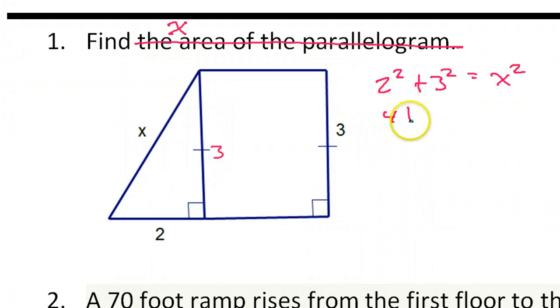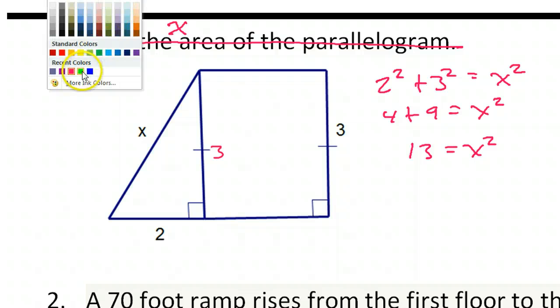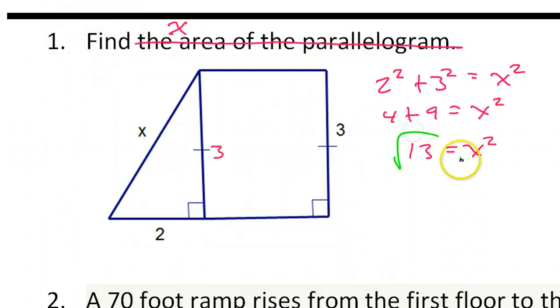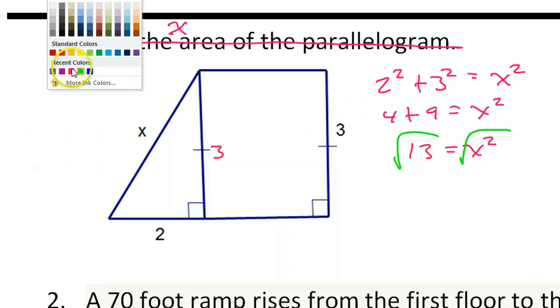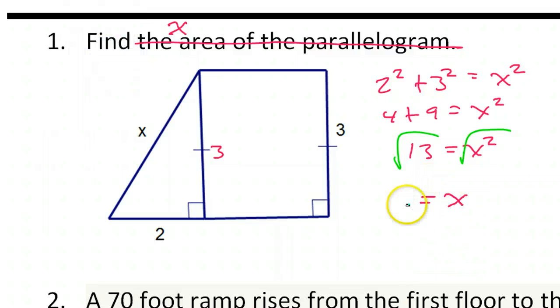So that's 4 plus 9 equals x squared. 13 equals x squared. Take the square root of both sides. So x is equal to the square root of 13.